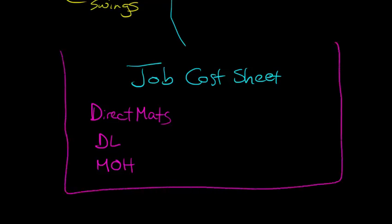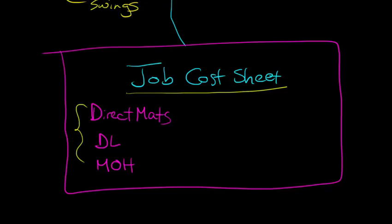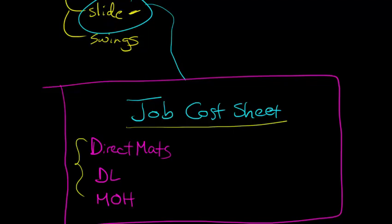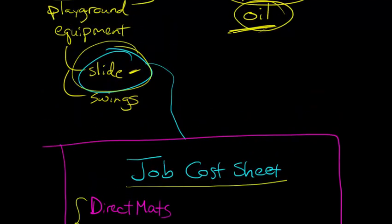Now, we're going to talk about applied manufacturing overhead because we won't know what the actual overhead is until the end of the period, typically. In our job cost sheet, we've got these three things, and that's going to come out with a cost for the job. If someone says, hey, I want this slide, it'd be nice if we could sit down and figure out, okay, what would it actually cost for us to make this slide?